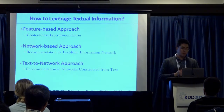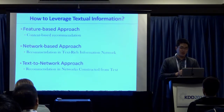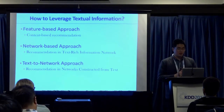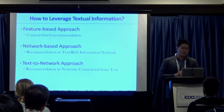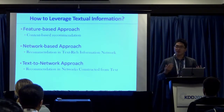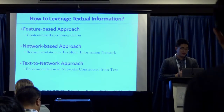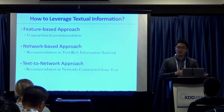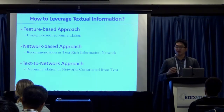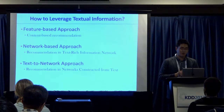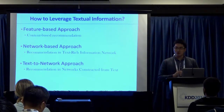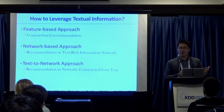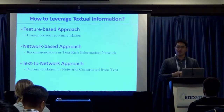Overall, using text information there could be three kinds of approaches. The first is the traditional way — use features, put everything into feature vectors, and apply machine learning algorithms. The second is to map everything into networks and apply network science and graph mining. The third is the text-to-network approach, where we transform everything into networks. We actually had a morning tutorial with Jiawei Han from UIUC on mining entity, relation, and attribute structures from massive text data.